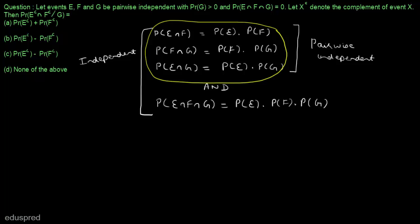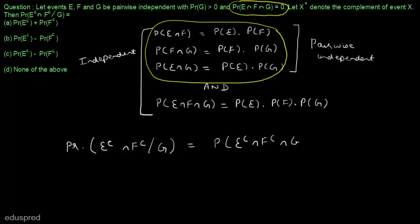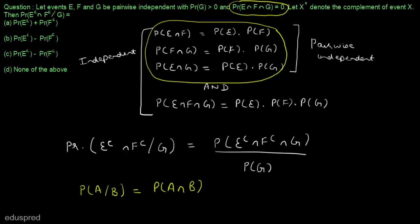We are also given that probability of E intersection F intersection G is equal to 0. We have to find the probability of Eᶜ intersection Fᶜ given G. Using the formula P(A|B) = P(A∩B) / P(B), this equals probability of Eᶜ intersection Fᶜ intersection G divided by probability of G. Let's find the numerator: probability of Eᶜ intersection Fᶜ intersection G.